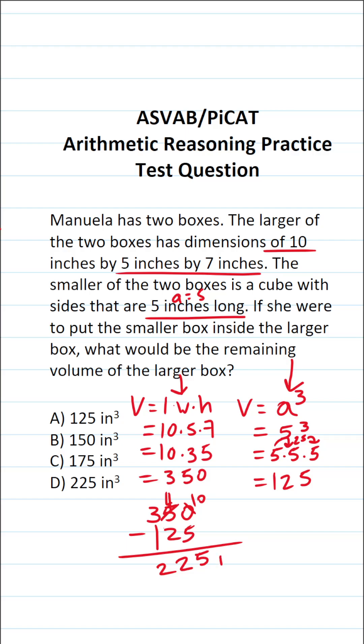So you can see that after the smaller box is placed inside the larger box, there's still going to be 225 cubic inches of volume still inside the larger box. So this one is D.